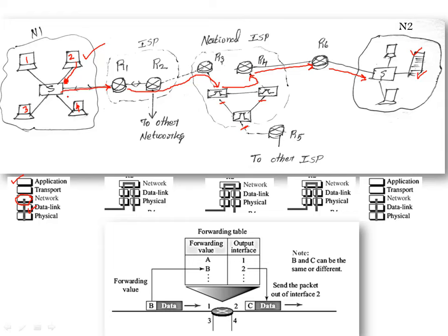The network layer is involved in the host in network 1 and in routers R1, R2, R3, R4, and all routers connected through the path. Only a single path is shown here, but network N1 may be connected with different paths. The role of the network layer is to find the best path and forward the packet through that path.